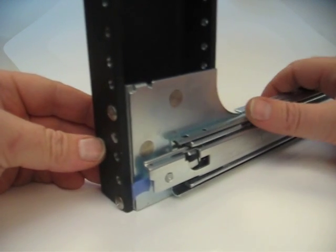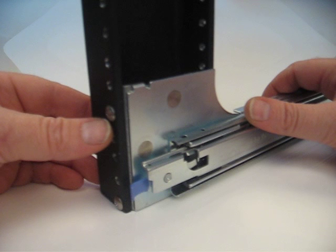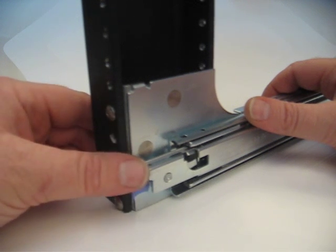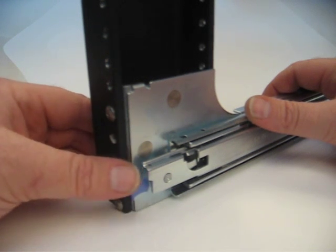So here we have a 2950 with a replacement rail ear from Rack Solutions installed into a round hole C-shaped upright rack, which is impossible to do with the standard rail kit.